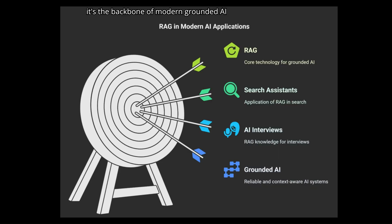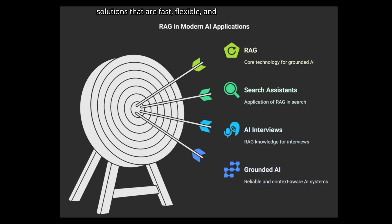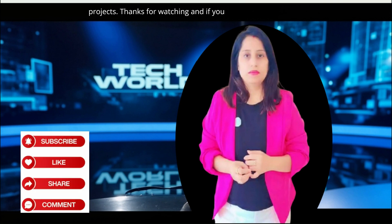To wrap up, RAG isn't just a buzzword — it's the backbone of modern grounded AI systems. Whether you're building intelligent search assistants, internal knowledge bots, or prepping for an AI interview, understanding RAG gives you a serious edge. It helps you build solutions that are fast, flexible, and based on real data, not just model guesswork. So keep exploring, keep learning, and start thinking about where you can apply RAG in your own AI projects. Thanks for watching, and if you found this helpful, don't forget to like, share, and subscribe to Tech World with Pete.